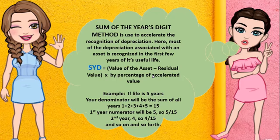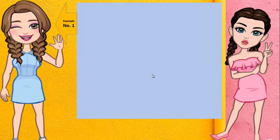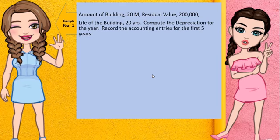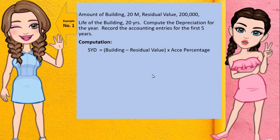So, how to compute? Here's the sample. The amount of the building is 20 million. Residual value is 200,000. You deduct one from the other. Then you need to add all the years to get your denominator. So 20 plus 19 plus 18 plus 16, etc. The total denominator is 210, and that will be your basis.